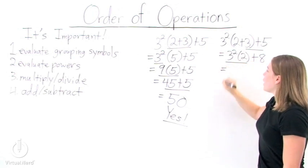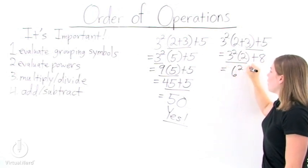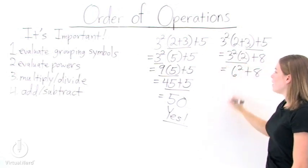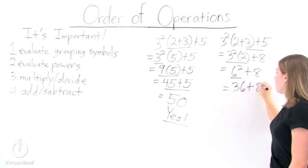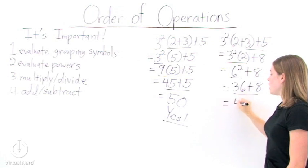Well, let's multiply these two together. We get 6 squared plus 8. Now evaluate 6 squared to get 36 plus 8. And add the two together to get 44.